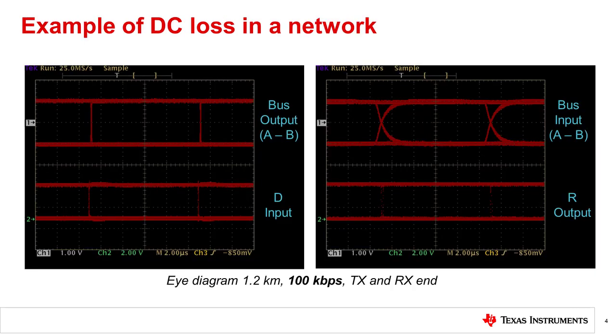This slide provides an example of an eye diagram of the output and input of the cable transmission end. The input pin D before the transceiver and the output pin R after the transceiver are included. The cable length here is 1.2 kilometers at a data rate of 100 kilobits per second.